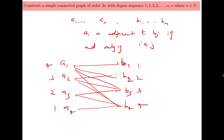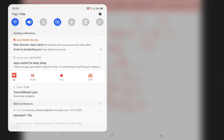You can see that this method generalizes easily. The same construction works whether n is 100 or 1 million. When we say construct a simple graph with a specific requirement, you must not just draw a graph for a particular value of n — it should hold for all values of n. That's all from Tutorial Sheet 2. Thank you very much for watching.